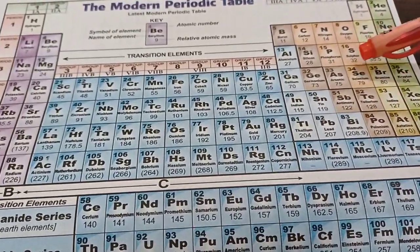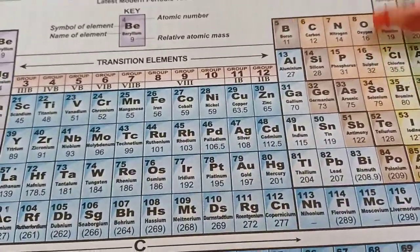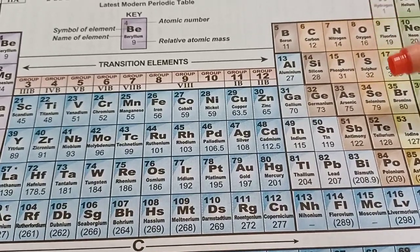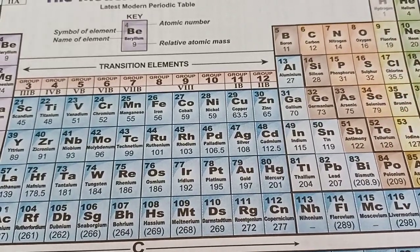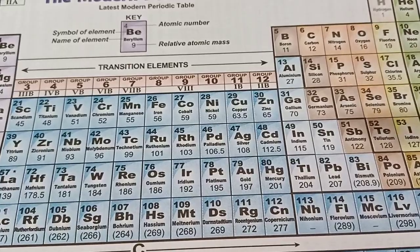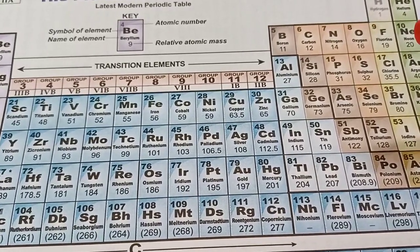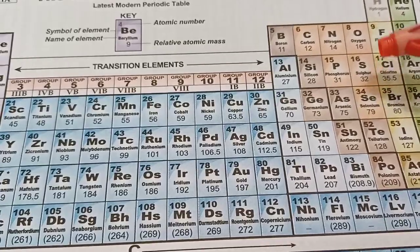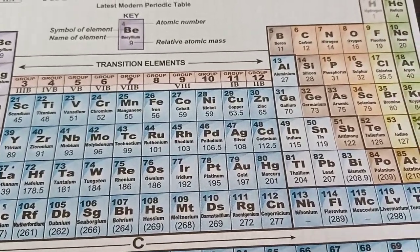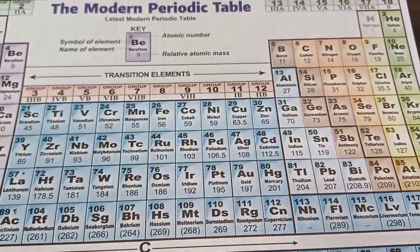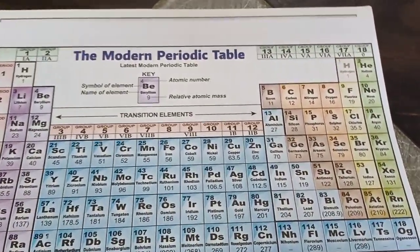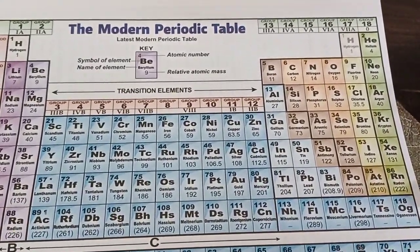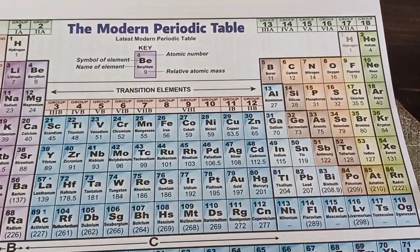A question can be asked in the exam — they will give you random elements, something like sulfur, oxygen, selenium, and tellurium, and ask you to arrange them in increasing order of non-metallic property. The answer would be tellurium, selenium, sulfur, and oxygen. Such application-based questions will be asked in exams, and you need to be trained for that, which will be done by solving exercises thoroughly for homework and clearing all your doubts regularly.